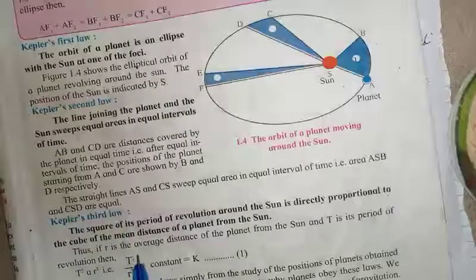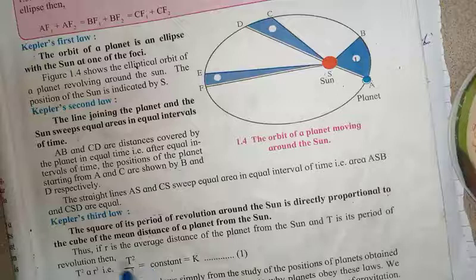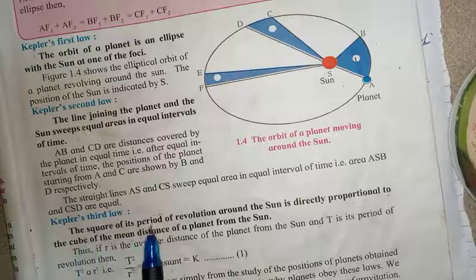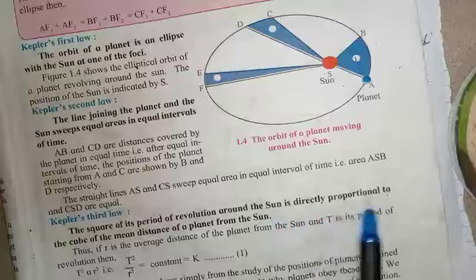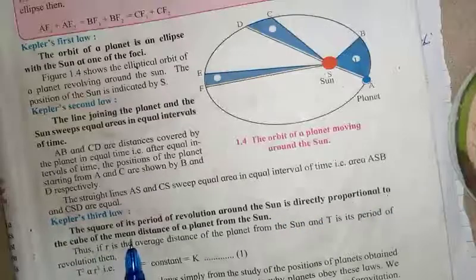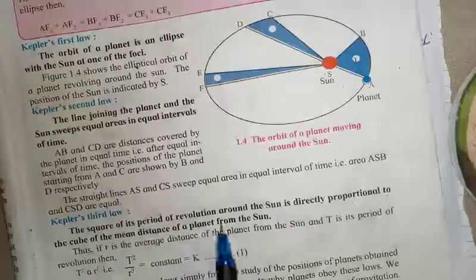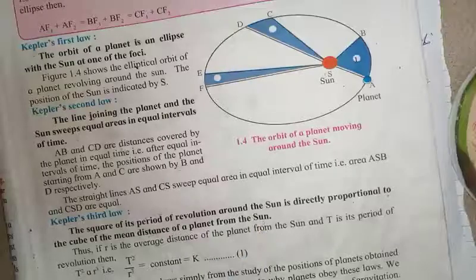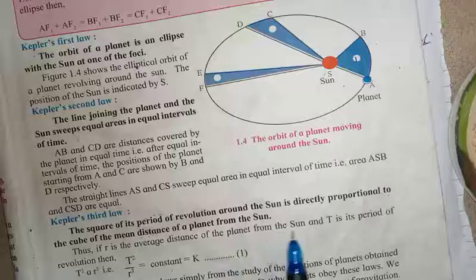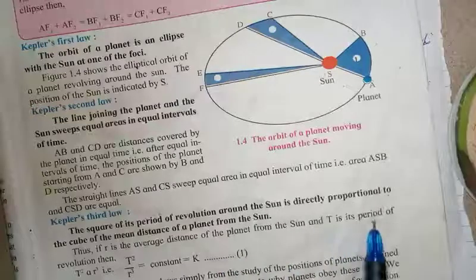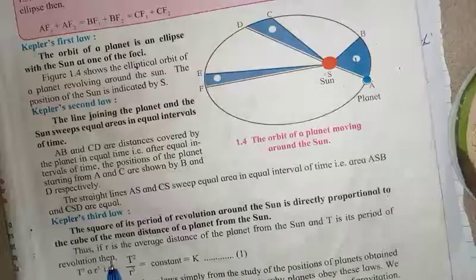Kepler's third law, also known as the law of time, states that the square of a planet's period of revolution around the Sun is directly proportional to the cube of the mean distance of the planet from the Sun. That is, if r is the average distance of the planet from the Sun and T is its time period of revolution, then T²...